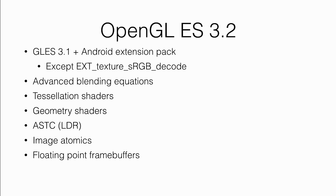OpenGL ES 3.2 is the newest version we ship with Android N. It is effectively OpenGL ES 3.1 plus the Android Extension Pack — a bundle of OpenGL extensions that, if present, guaranteed access to all those extensions, making life easier for developers. This has been folded into the OpenGL ES 3.2 specification. Highlights include advanced blending equations — so the hardware handles blending modes like those in Photoshop without writing shaders. You can use tessellation and geometry shaders to generate geometry at runtime, adding more triangles dynamically as the camera gets closer to an object. There's a new texture compression format called ASTC, plus other features that OpenGL ES developers will care very much about.